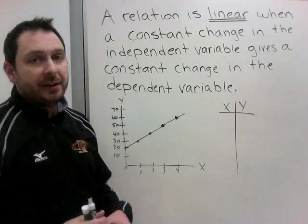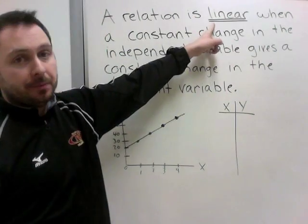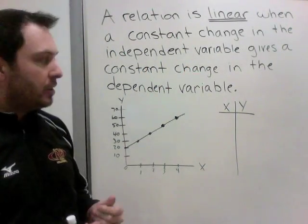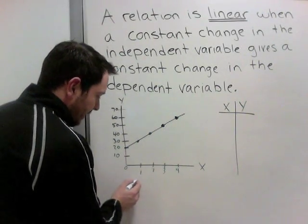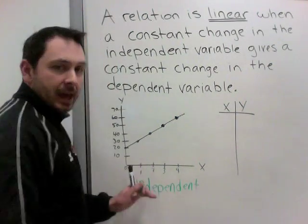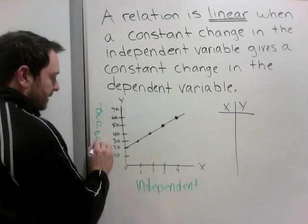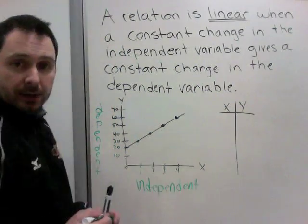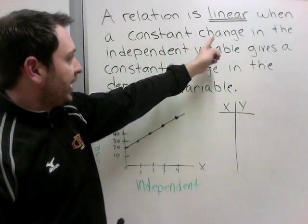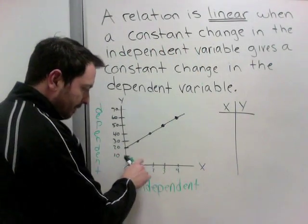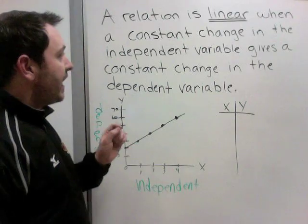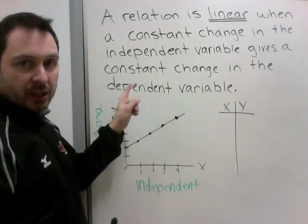Let's look at the definition of linear. A relation is linear when a constant change in the independent variable gives a constant change in the dependent variable. The independent variable is on the x-axis, and the dependent variable is on the y-axis. So a constant change in the independent variable means if x goes up the same amount each time — here I have dots at 1, 2, 3, and 4 — then it will give a constant change in the dependent variable.